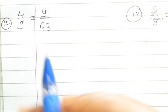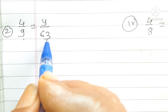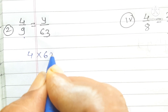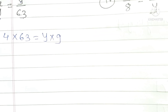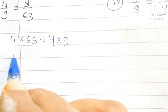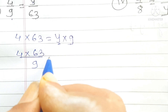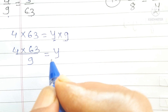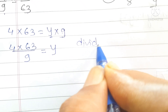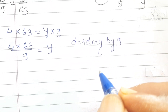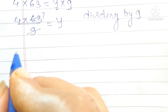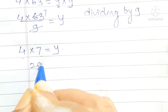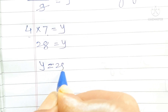Next: 4 upon 9 is equal to y upon 63. First step is cross multiplication: 4 into 63 is equal to y into 9. To find y, we divide both sides by 9. 4 into 63 divided by 9 equals 4 into 7, which is 28. So y is equal to 28.